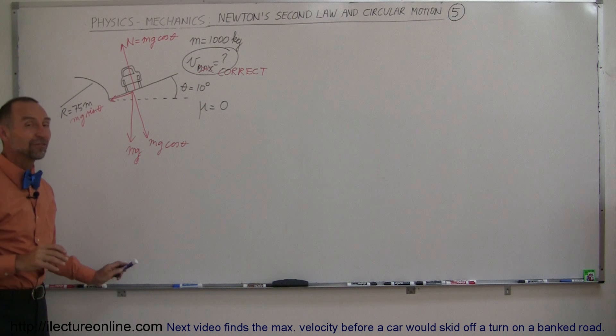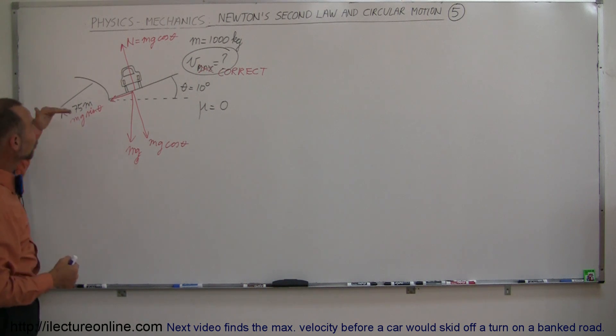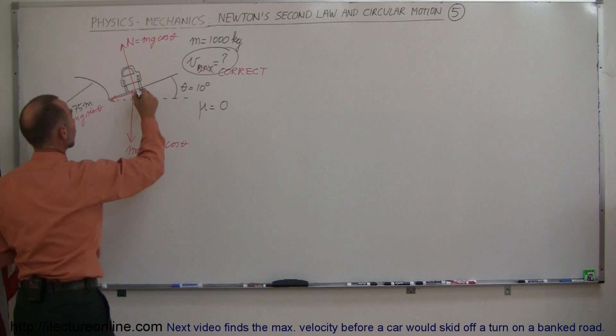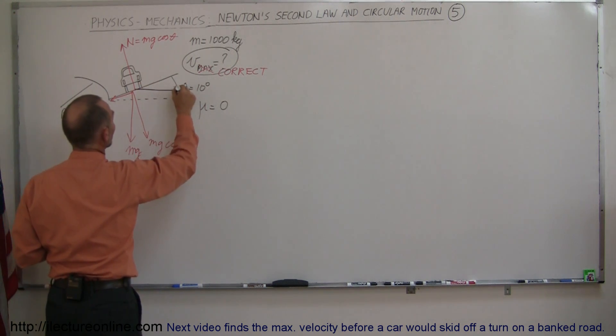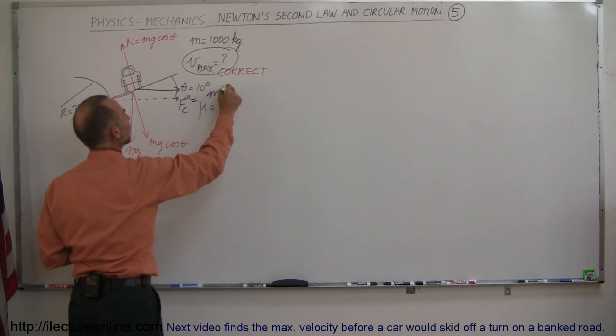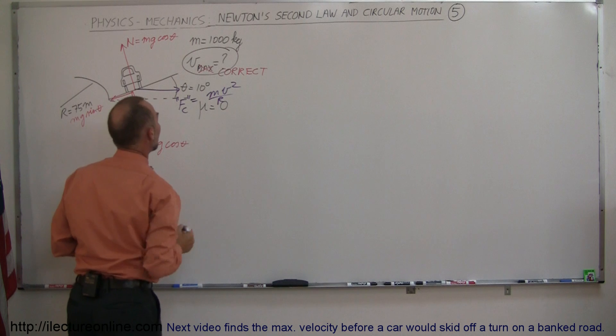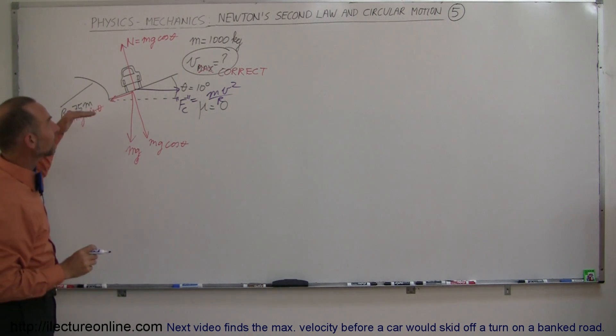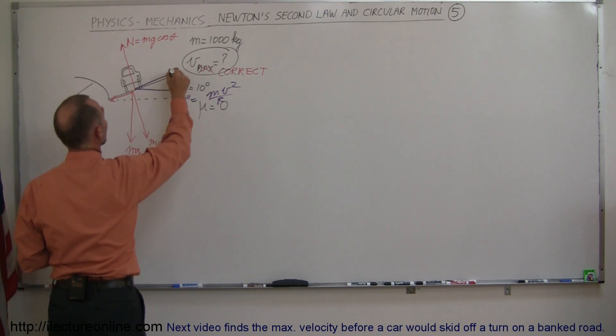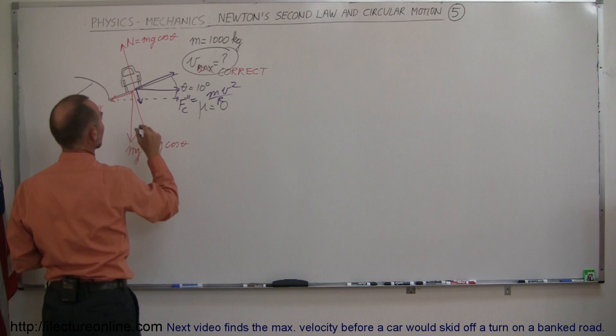Secondly, we can say there's a fictitious force called the centrifugal force that will push a car to the outside because of its circular motion. So we can say there's a force in this direction, which is called F sub C, put it in parentheses, it's not a real force, and of course that's equal to mv squared over R. But that's pushing directly horizontally outward, so since we're on incline,